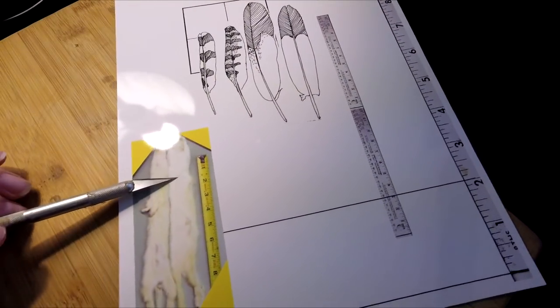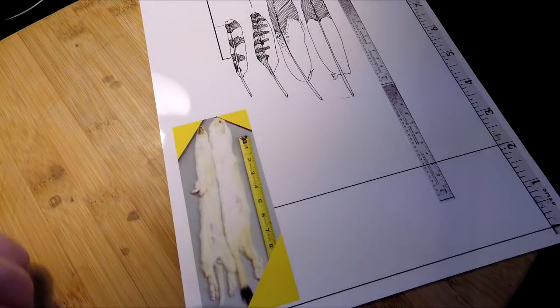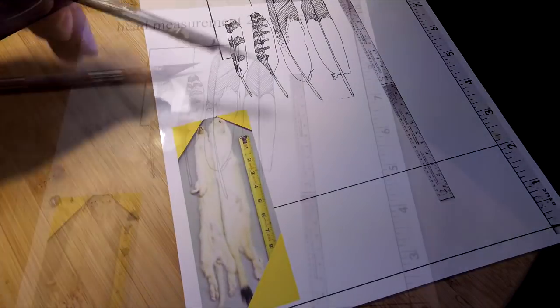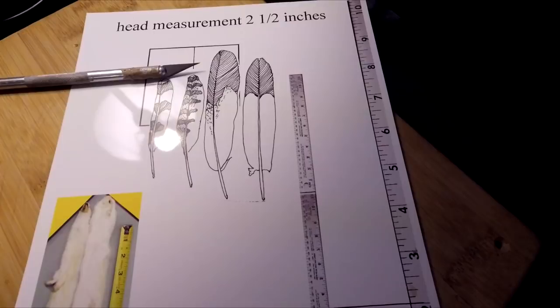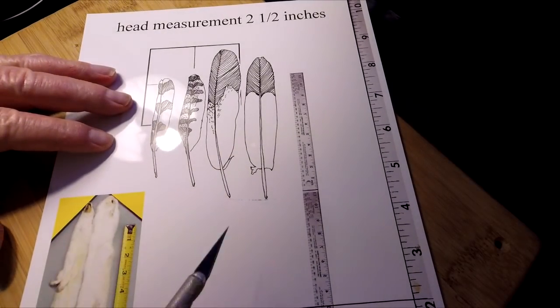The same thing with the ermine down here in the bottom corner. I can scale those out to fifteen inches in length. They're going to be all the straight feathers, so that's the one I'm going to cut out.